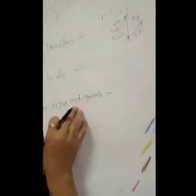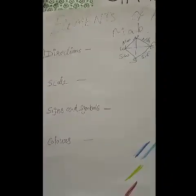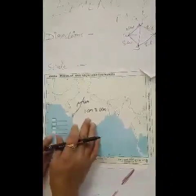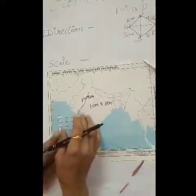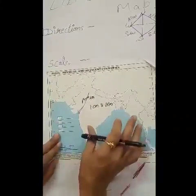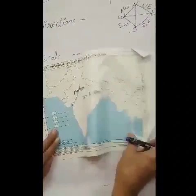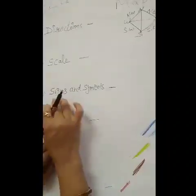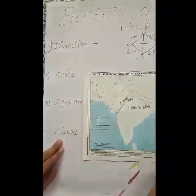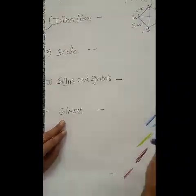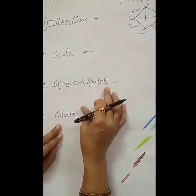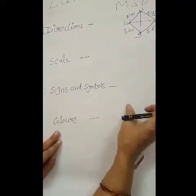The next element is signs and symbols. We do not have enough space on a map to show mountains, rivers, lakes, roadways and railways in their actual size. So we use signs and symbols to easily show these features on a map. These symbols are known as conventional symbols.